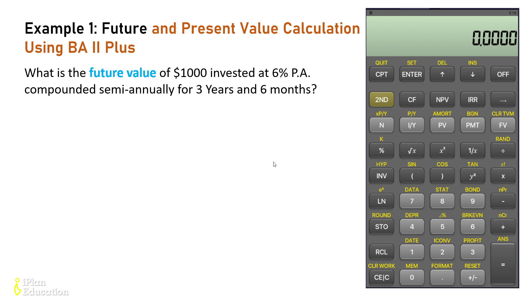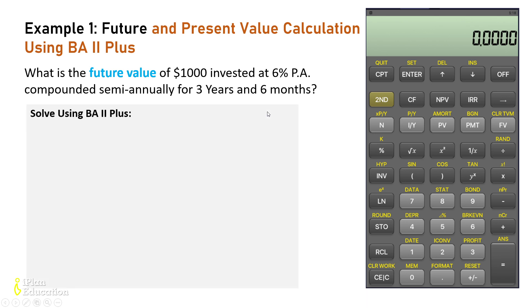Let's suppose we have this question: what is the future value of a thousand dollars invested today at six percent per annum, compounded semi-annually — that means twice a year — for three years and six months, which means three and a half years. So how do we calculate it using the BA II Plus?